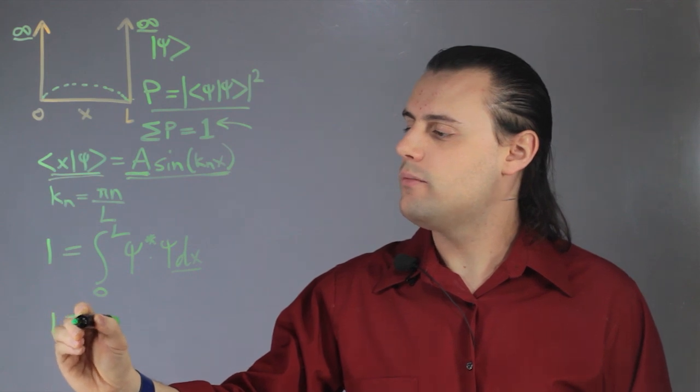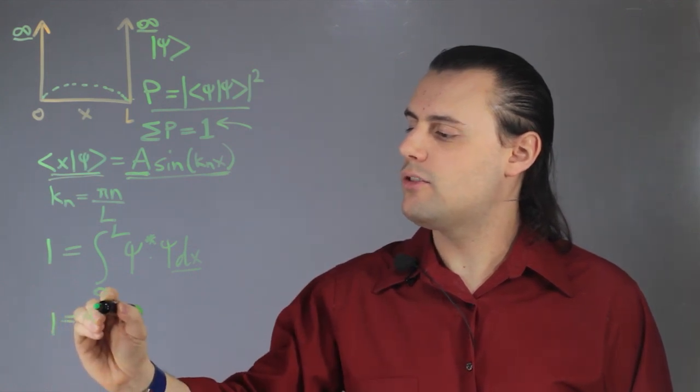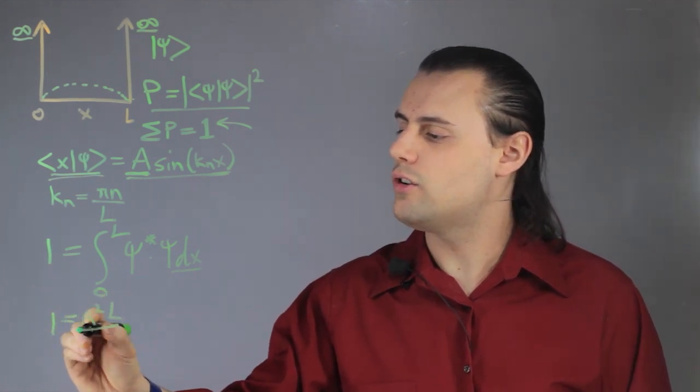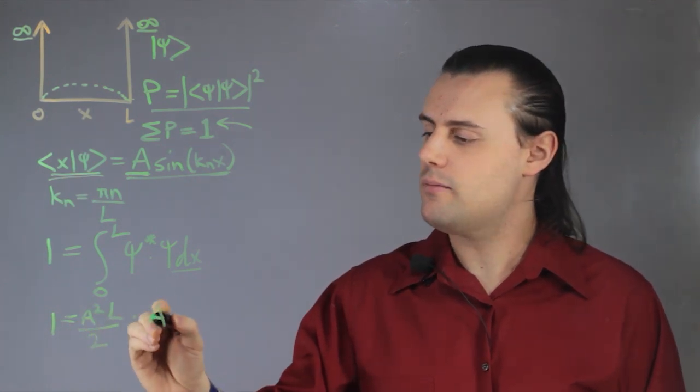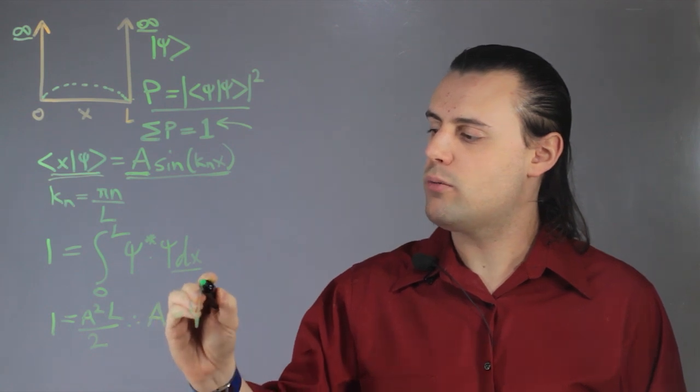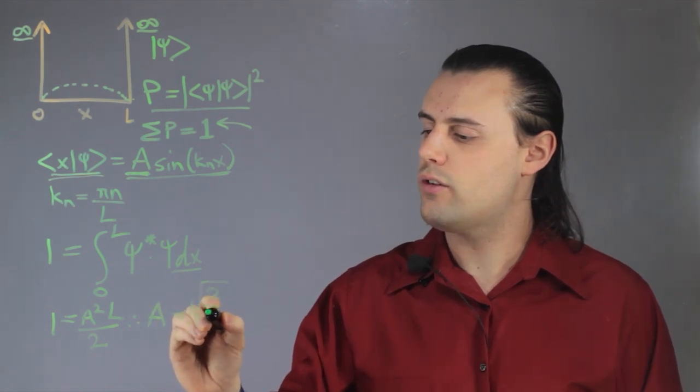I end up with one is equal to a squared times L over two. Therefore, when we solve for A, we see that A is equal to the square root of two over the length L.